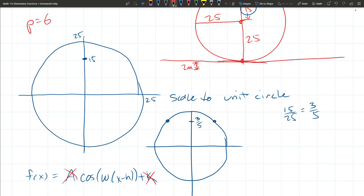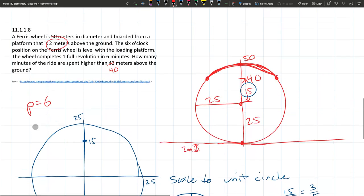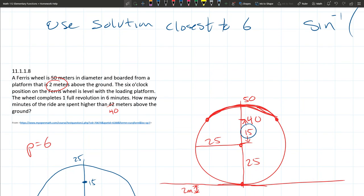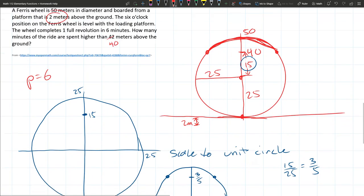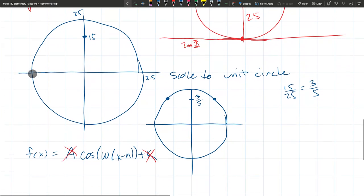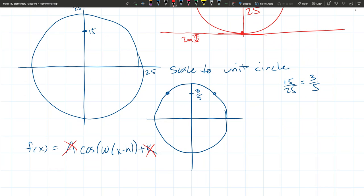There's no shift up or down. It just asks how many minutes of the ride are spent higher than that amount above the ground, so I don't actually need to worry about this period or horizontal offset.